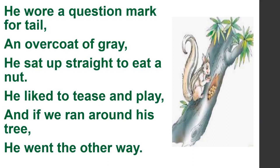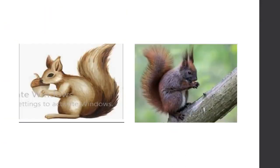If we ran around his tree — this line tells us that the poet and the other children with him, if they ran around the squirrel's tree to go near and approach the squirrel, then the squirrel went the other way. It ran in different directions when it was approached by the poet. So in this poem, the poet has described a squirrel with whom he is trying to play, but it ran away in the opposite direction.